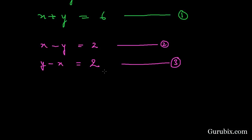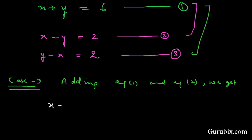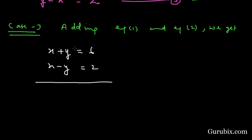We now solve these equations by pairing equation number 1 with equation number 2, and equation number 1 with equation number 3. In case 1, we add equation number 1 and equation number 2: X plus Y equals 6, and X minus Y equals 2. Adding these two equations, the Y terms cancel, giving 2X equals 8, so X equals 4.